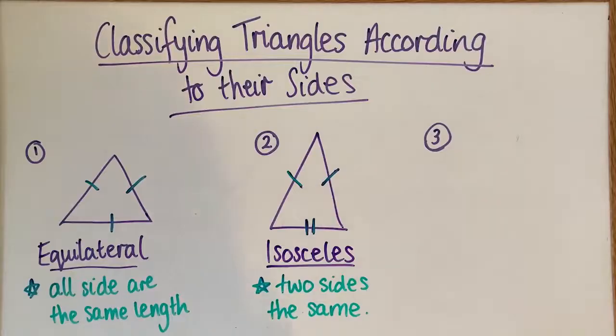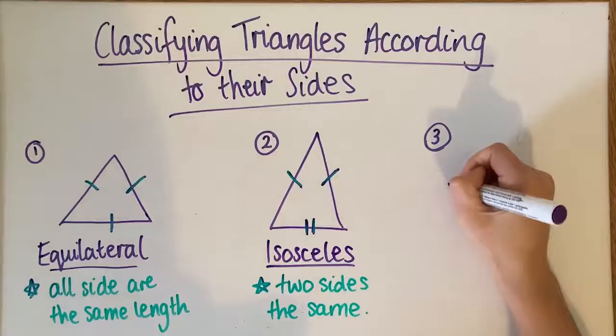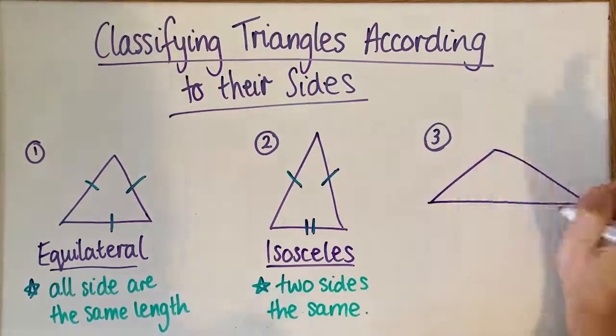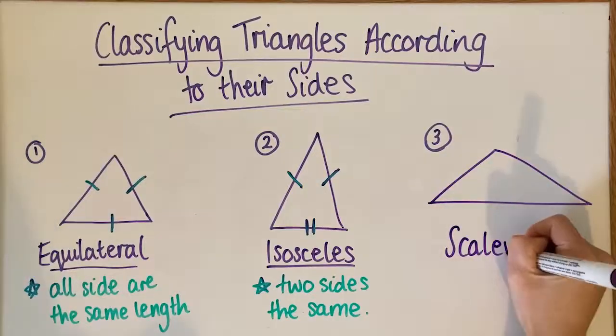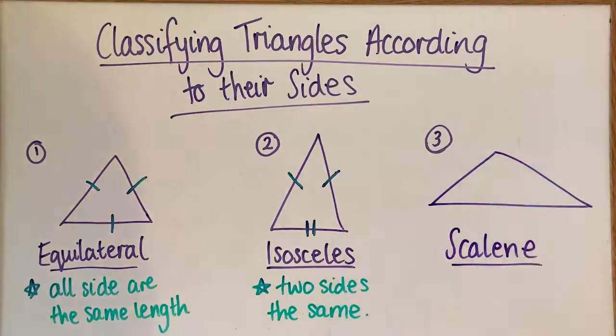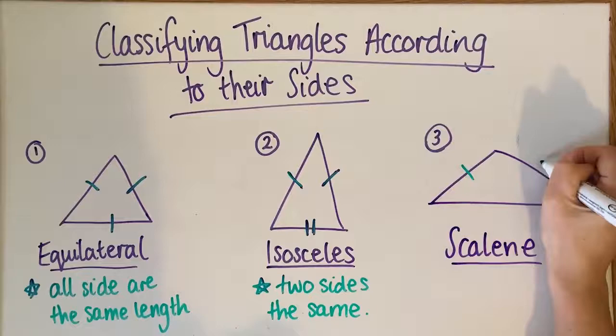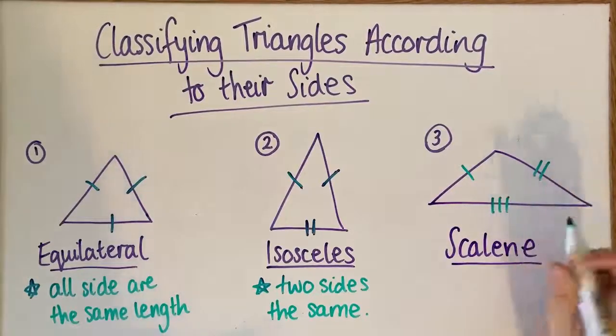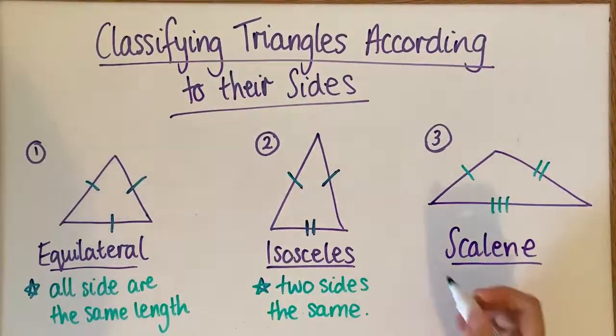And the last way to classify triangles according to their sides is scalene. A scalene triangle has every single side different - one, two, three, all different.